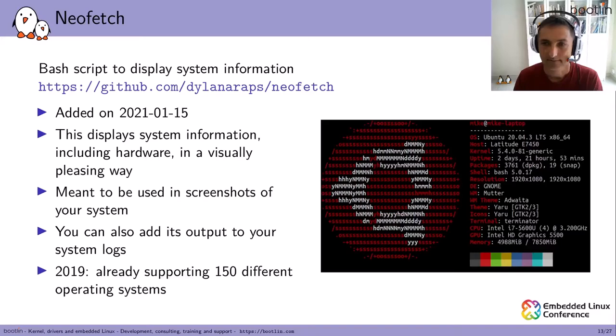The next one is called CoreMark, a microcontroller and CPU benchmarking tool. It allows you to compare microprocessors and microcontrollers in terms of read-write, integer control operations, and pipeline performance. It's actually small enough to fit in the CPU cache. It may be useful if you hesitate between several CPUs for your design — here you can see a comparison between Raspberry Pi 3 and Raspberry Pi 4.